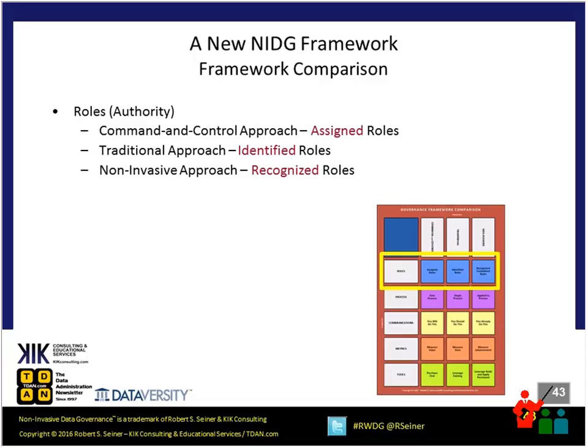The significant differences when it comes to roles and responsibilities: in the command and control approach, people are assigned into specific roles associated with governing data, which immediately feels like something additional to what they're already doing — over and above existing work effort. If they're already busy 100 to 120 percent of the time, the first response will be: where am I going to find time to participate? In the traditional approach, people are identified into specific roles, but there's not necessarily any execution and enforcement of those roles — you'll put a program in place and expect people to follow it, but it's not forced on them.